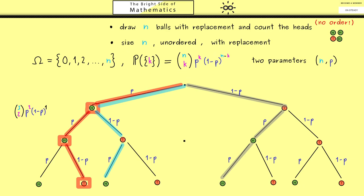There are a lot of different notations for this probability measure. For example, some people write b(n, p), and a slightly longer form is Bin(n, p). No matter which notation is used, you should always know the definition of the mass function and the meaning of n and p.